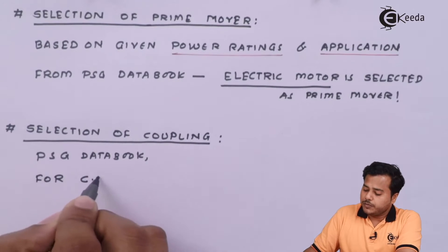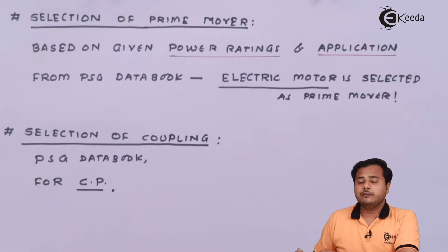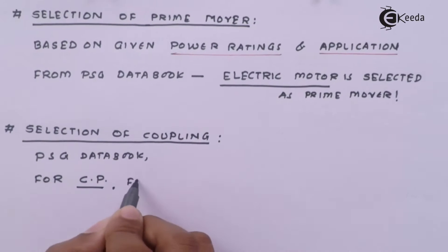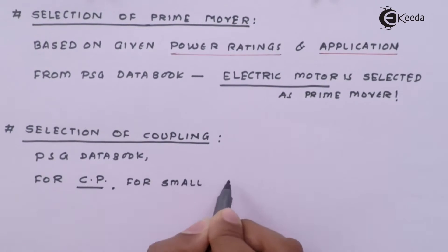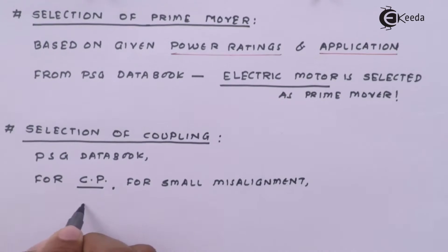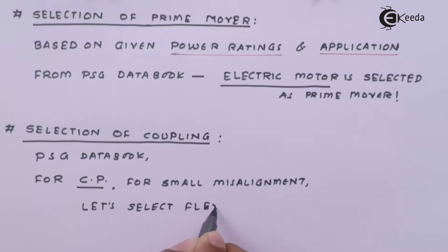For centrifugal pump, a slight misalignment in the shaft is allowed generally. Let us select flexible coupling of bush pin type.